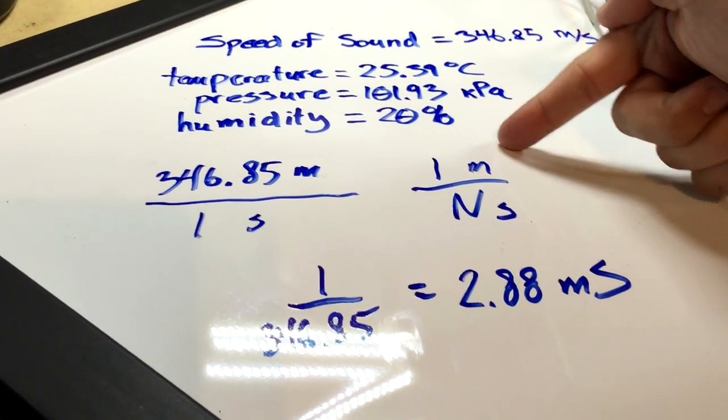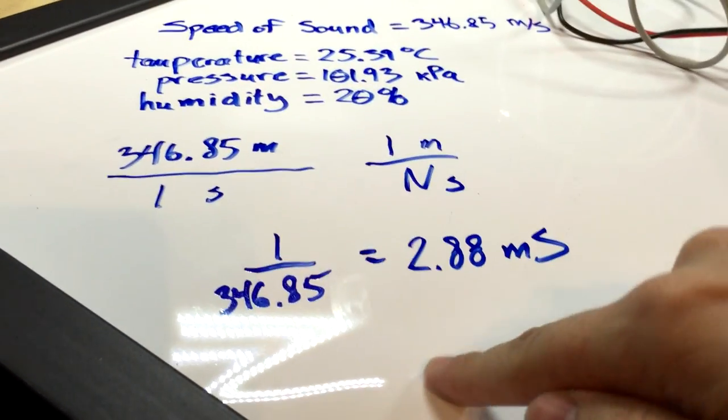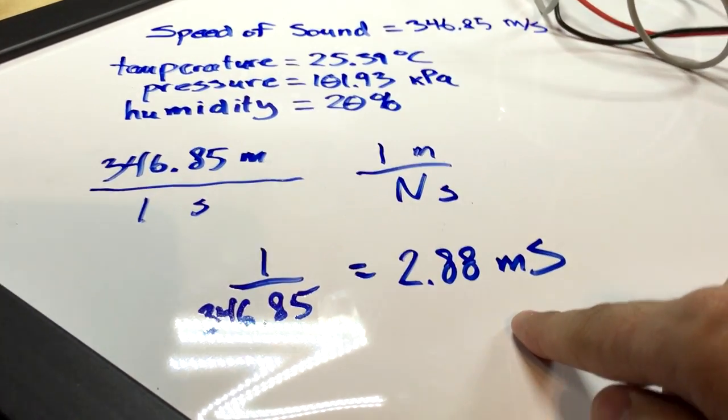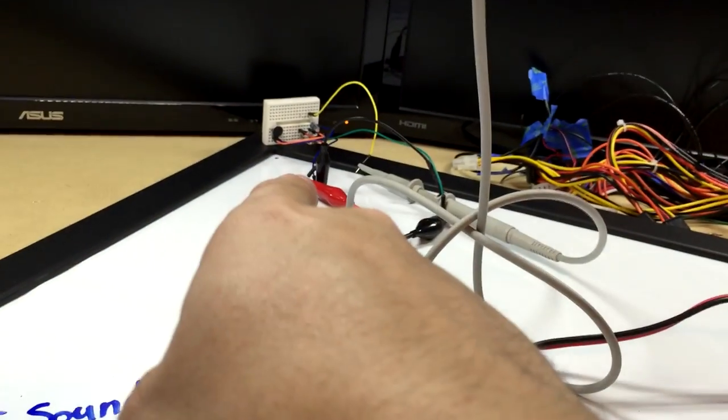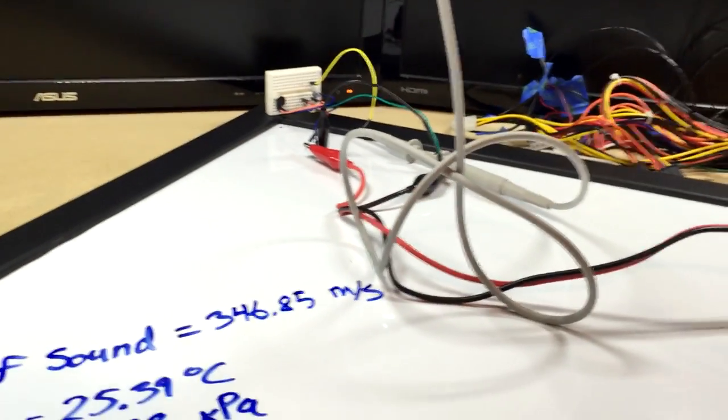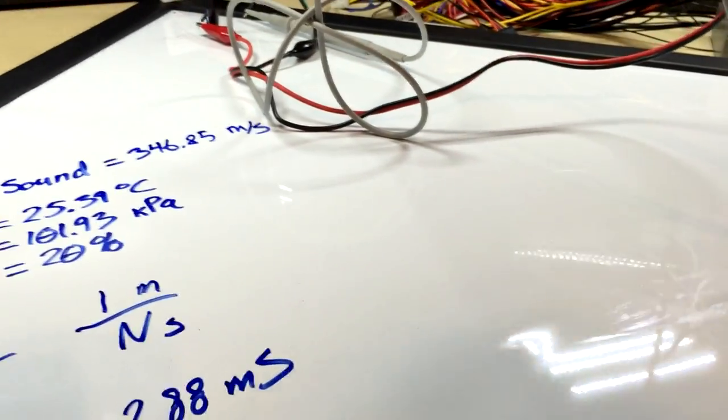I did the math and the speed of sound in my lab is 346.85 meters per second. So I cross-multiply to find the time for one meter, which gives me 2.88 milliseconds travel time from my front microphone to my back microphone, which is exactly one meter away.